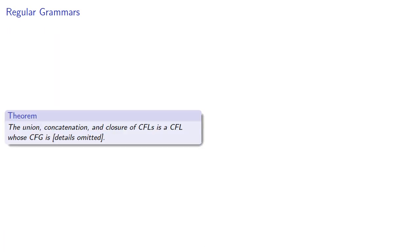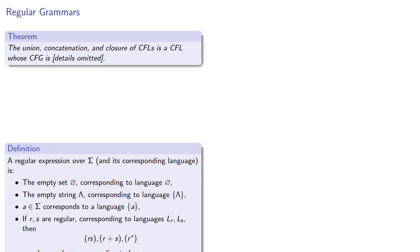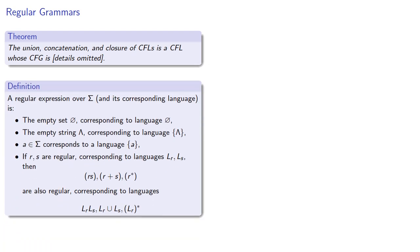Now because the union, concatenation, and closure of context-free grammars is a context-free grammar, and we have the context-free grammars for the simplest regular languages, we can use union, concatenation, and closure to find the context-free grammar for any regular language.